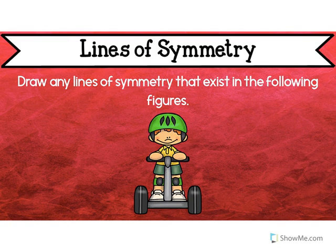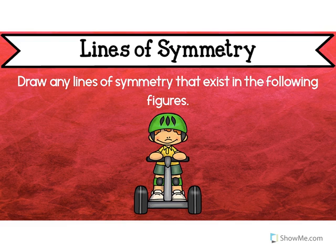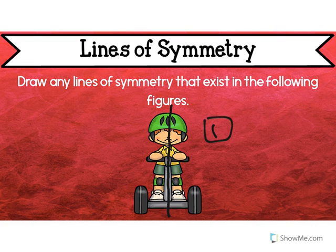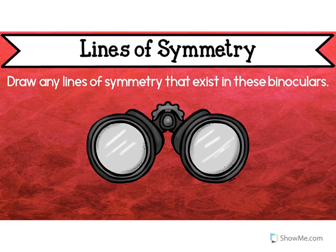Now I want you to try on this figure. If I folded this kid in half this way, would it be the same? No. But if I folded it in half this way, would it be the same? Yeah, it would. So this one had one line of symmetry. Try it on this one — where's the line of symmetry here? Maybe it has more than one.